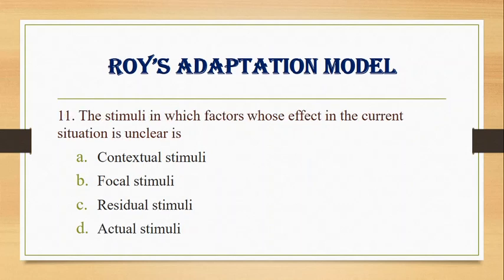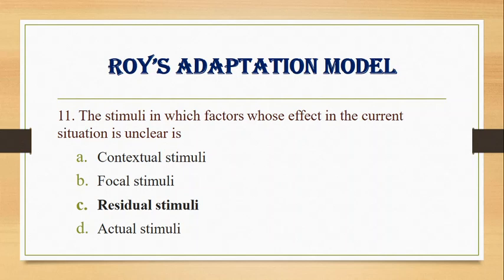Number 11. The stimuli in which factors whose effect in the current situation is unclear is: A. Contextual stimuli, B. Focal stimuli, C. Residual stimuli, D. Actual stimuli. Answer: C. Residual stimuli. Residual stimuli is the unclear stimuli.